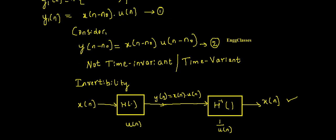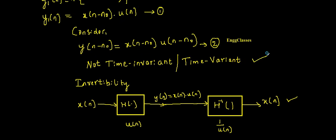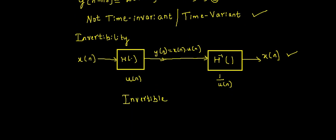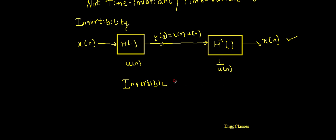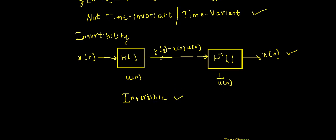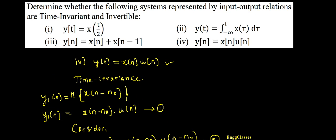So with respect to both properties, the first property, it is not time invariant or it is time variant and it is invertible. Is this fine? I hope I am clear here. If there are still any doubts, please let me know in the comment section and I would answer those doubts. And thank you so much for watching.